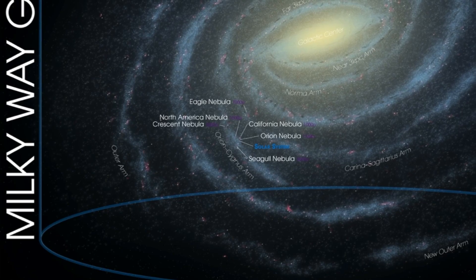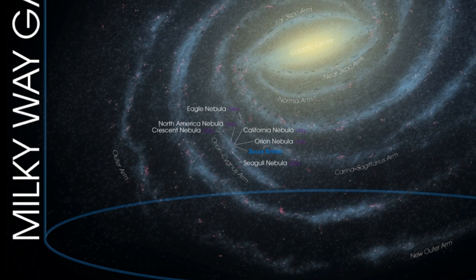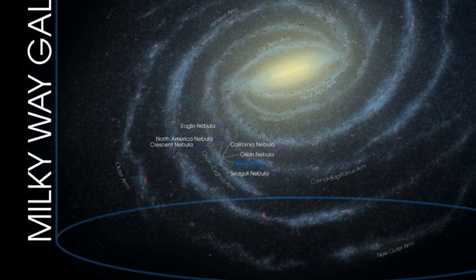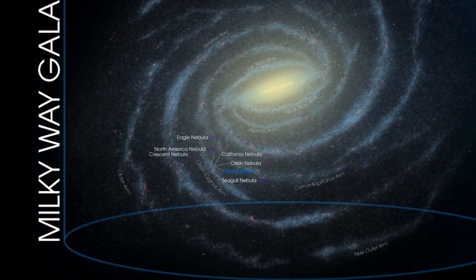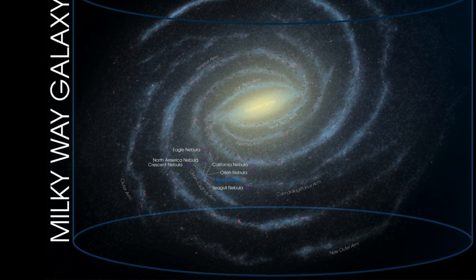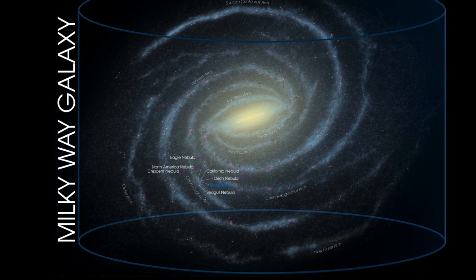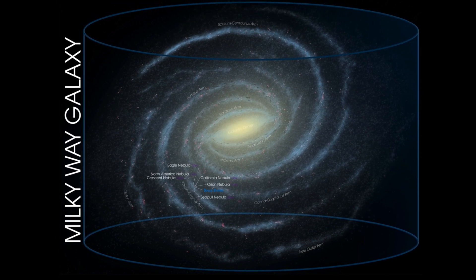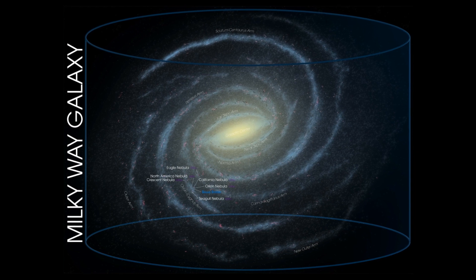Our solar system is just one of many other star systems that inhabit the Milky Way galaxy. The Milky Way galaxy is a collection of billions of stars, as well as all of the other planets that orbit them, all held in a spiral orbit by the force of gravity. Scientists believe that a supermassive black hole is located at the bright center of the Milky Way. Earth, our sun, and the solar system are located in orbit approximately 26,000 light years from the center of the Milky Way galaxy.